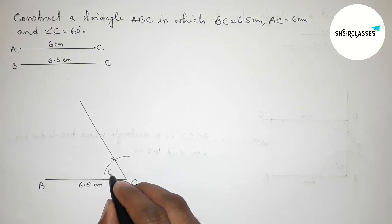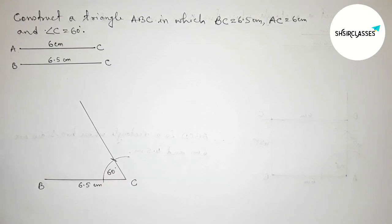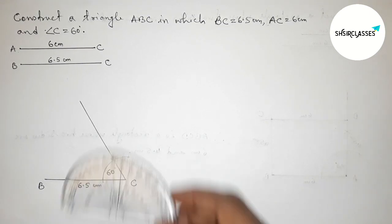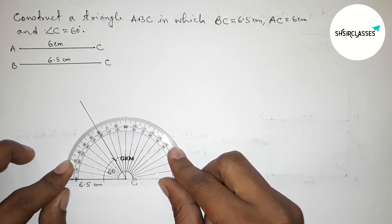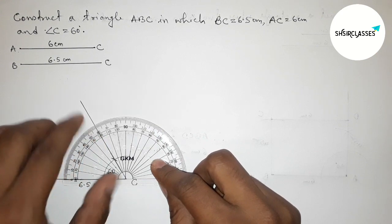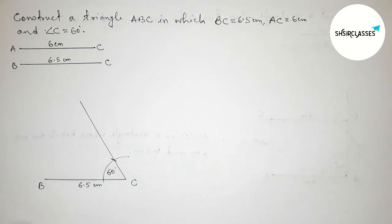Now I am going to check this is 60 degree angle, checking with the help of protractor whether it is 60 degrees or not. So this is perfectly a 60 degree angle, so angle C equals 60 degrees.